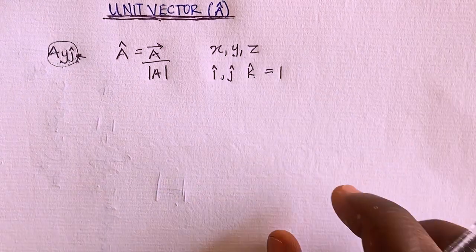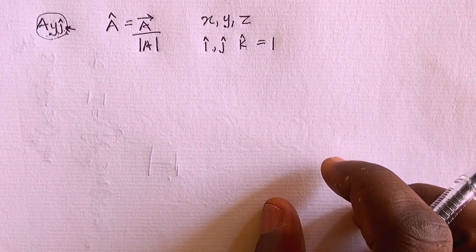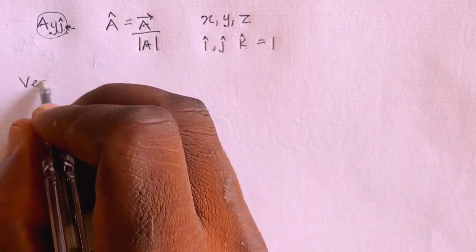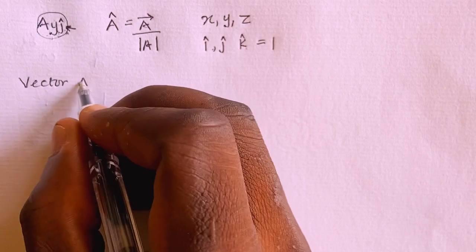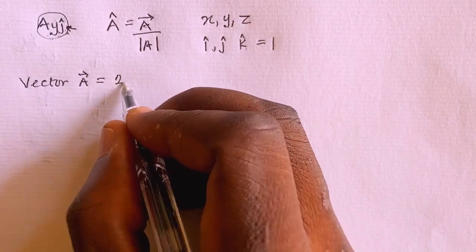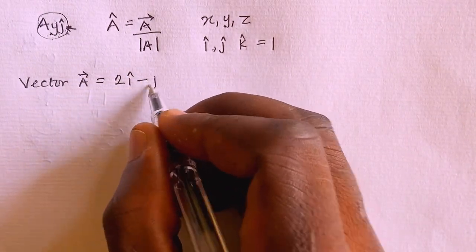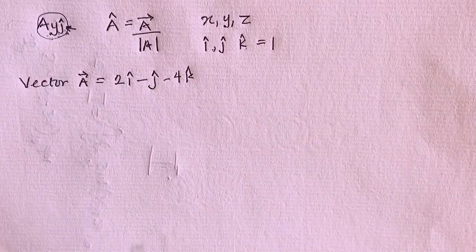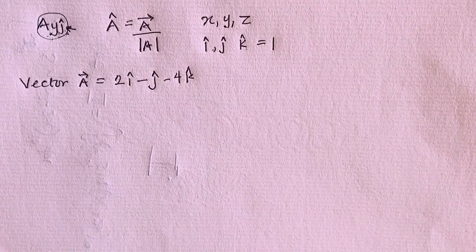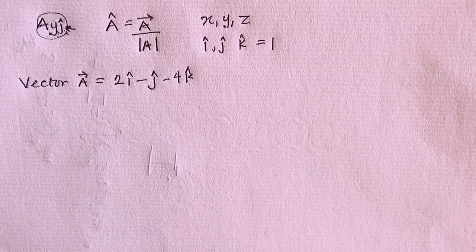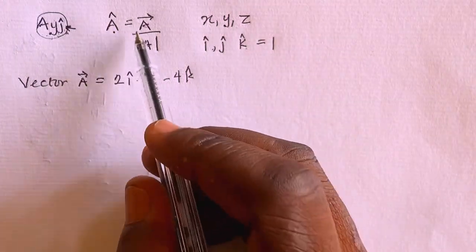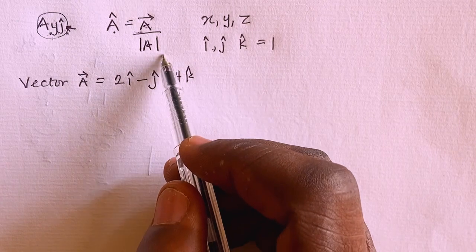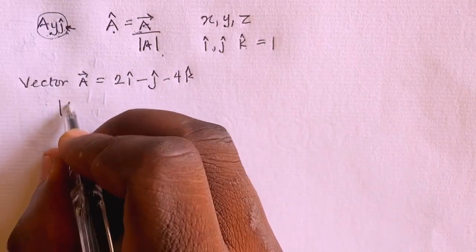To verify that the magnitude is actually equal to 1, suppose we have vector a equal to 2i minus j minus 4k. We are asked to find the unit vector. To find the unit vector, what we need to find first is that the unit vector is given as vector a divided by the magnitude of a.